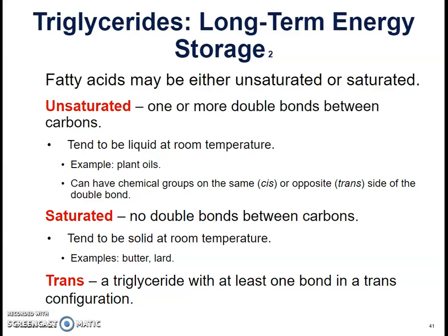Unsaturated fatty acids can have chemical groups on the same side or on opposite sides of their double bonds. If the branches are on the same side, they're said to be cis; if they're on opposite sides, they're trans. Saturated fats have no double bonds, meaning every single carbon atom is forming as many bonds as possible — no double bonds, no triple bonds. Trans fats are triglycerides that have at least one bond in a trans configuration, and they are generally considered to be bad for us, so a lot of food companies are taking trans fats out of their products.